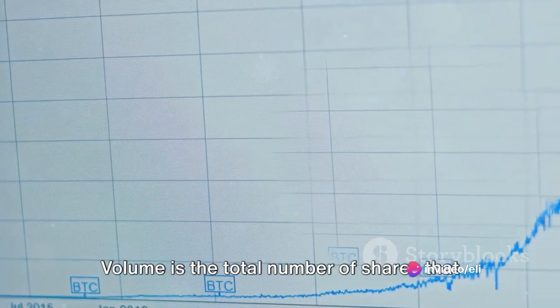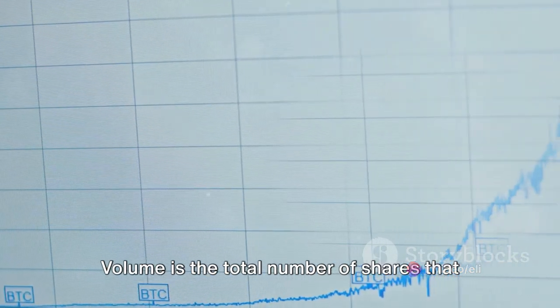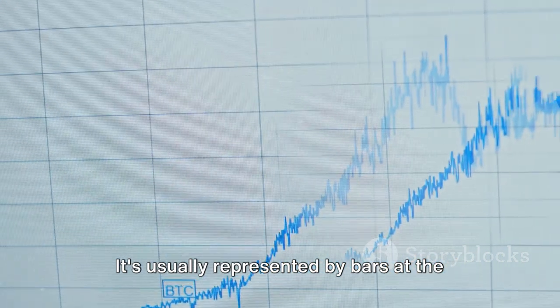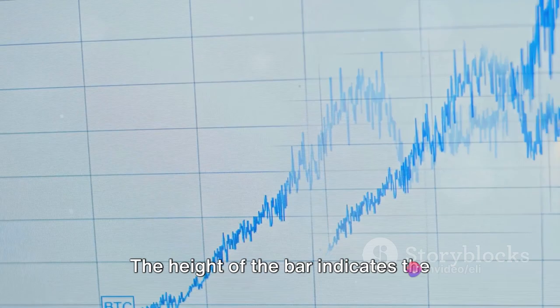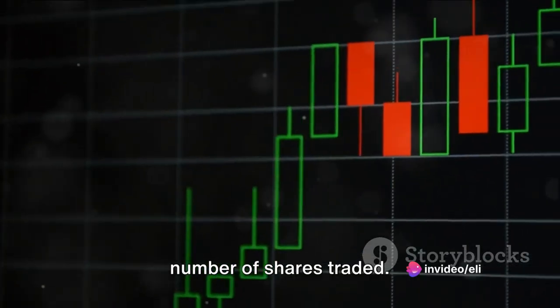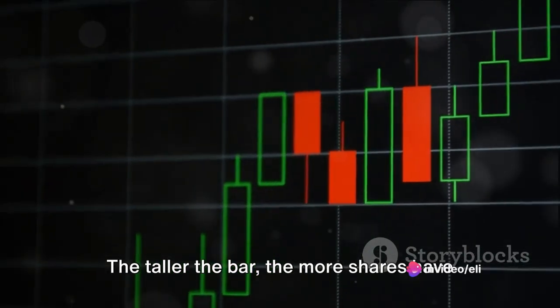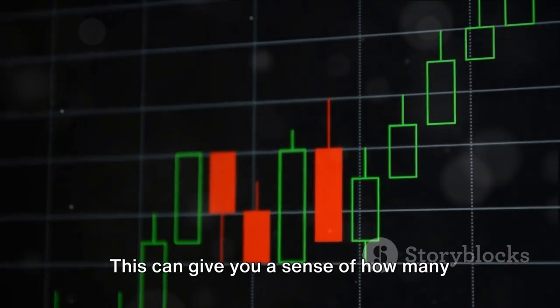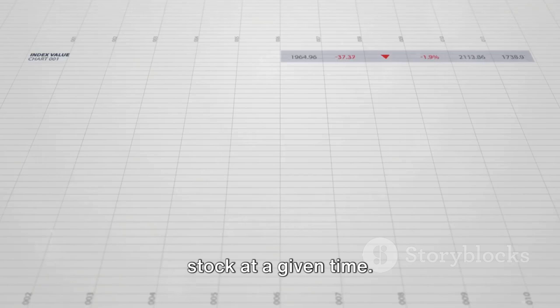Next up is volume. Volume is the total number of shares that are traded during a specific period. It's usually represented by bars at the bottom of the chart. The height of the bar indicates the number of shares traded. The taller the bar, the more shares have been bought or sold. This can give you a sense of how many people are interested in a particular stock at a given time.